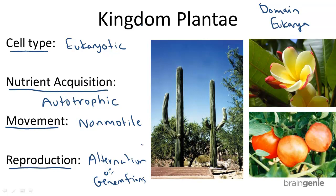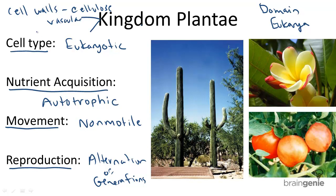The plant kingdom includes all organisms that have cell walls made of cellulose — that's important to remember. And they contain chloroplasts where photosynthesis takes place.